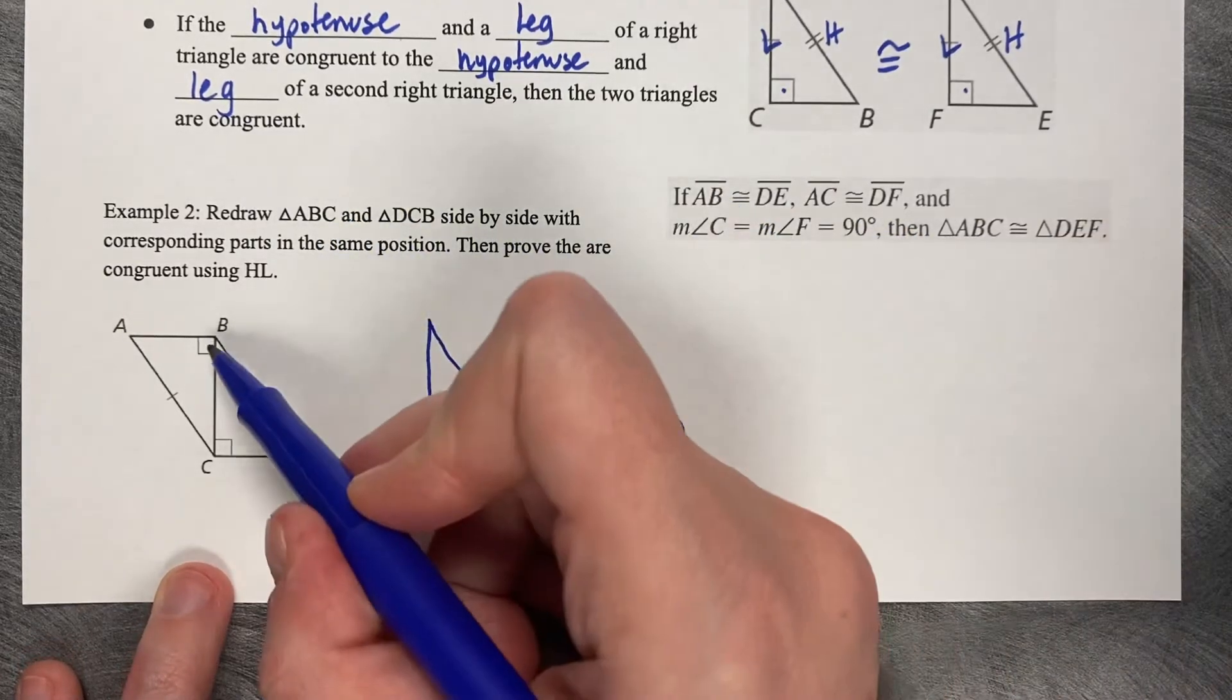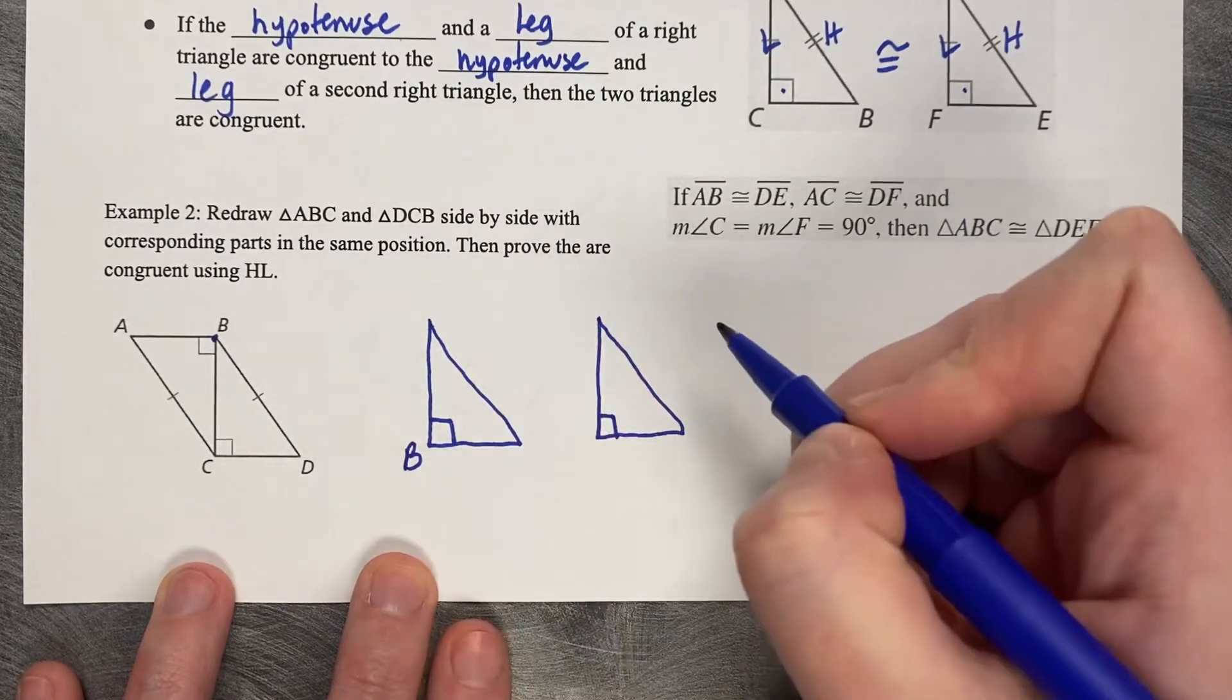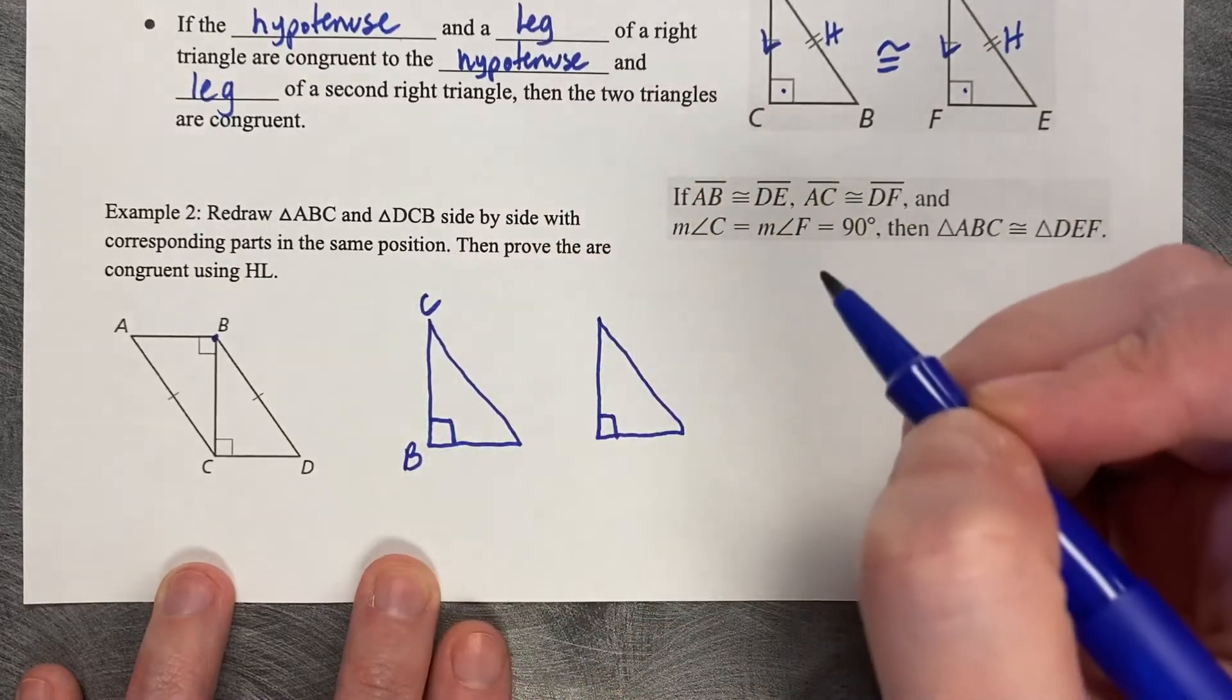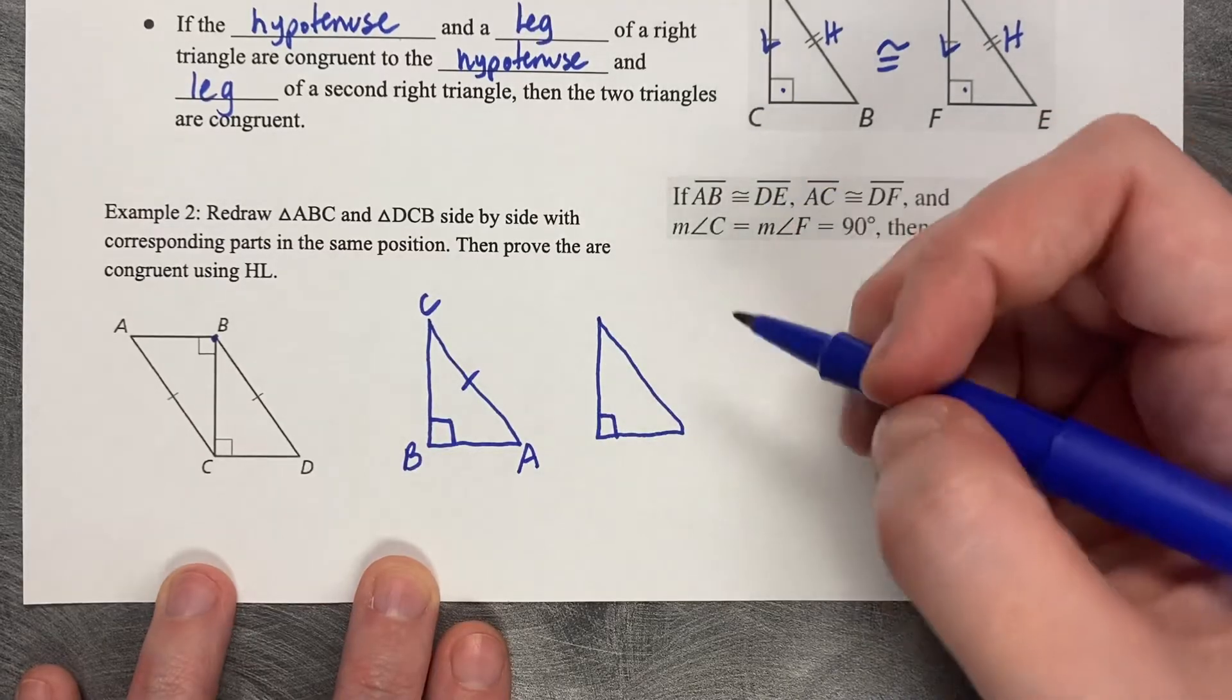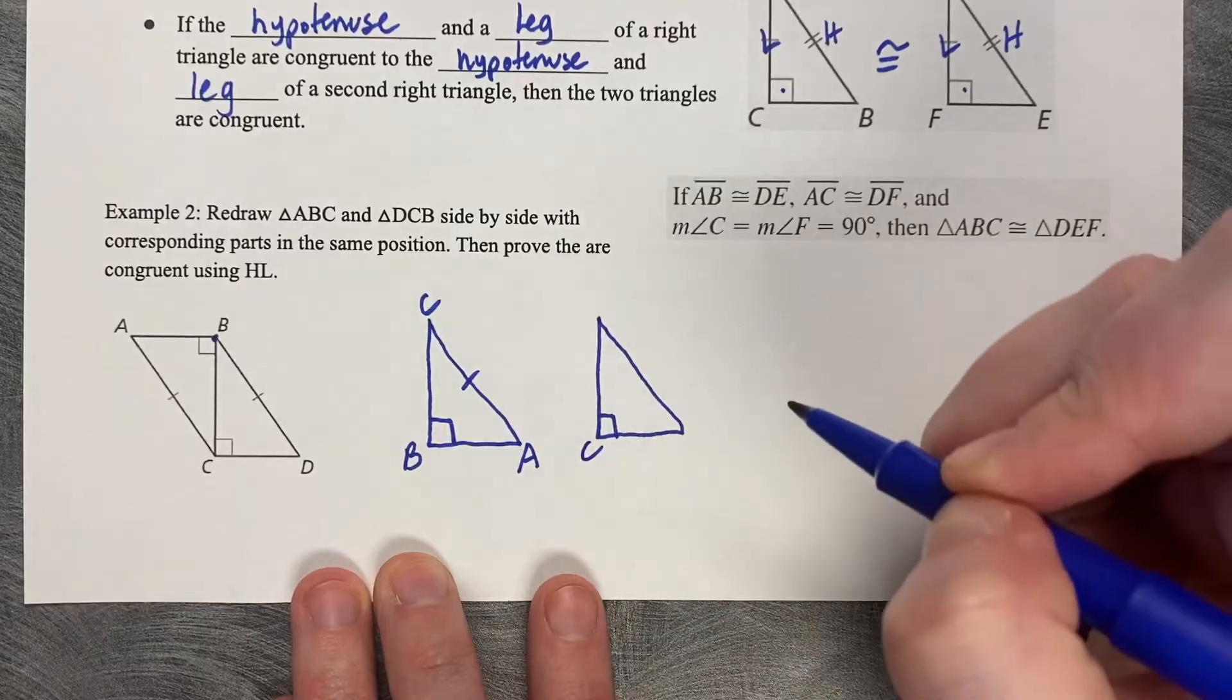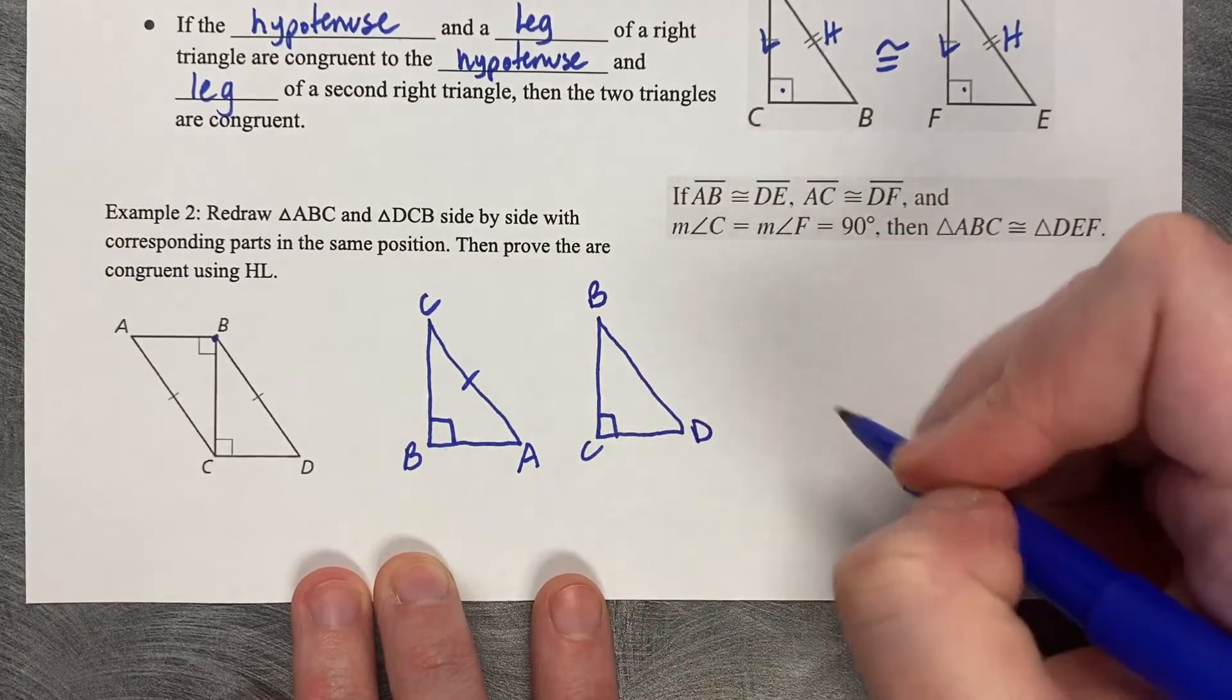We have to label each. First ABC: B is at the corner of the 90-degree angle, C is up at the top, and A is over here. AC has a tick mark. Same thing with the other triangle: C is at the 90-degree angle, B is up at the top, and D is over here with a tick mark.